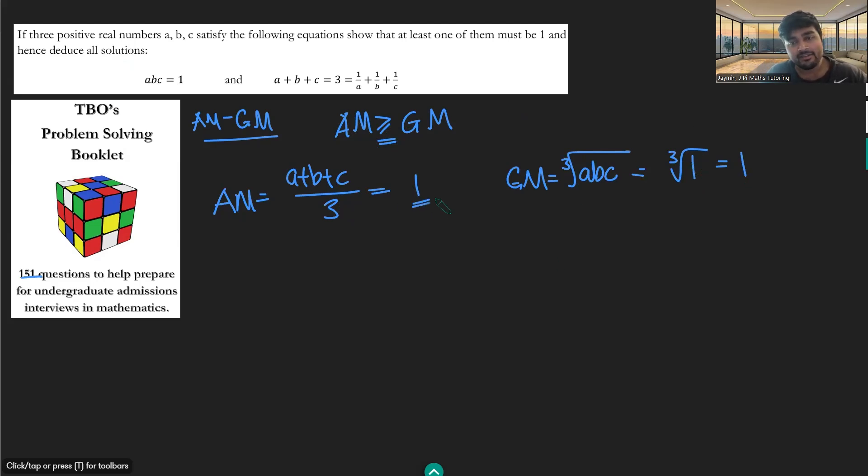And now notice that the AM equals the GM, and so therefore these three numbers A, B, and C have to be the same according to the AM-GM inequality. So A equals B equals C, and then you can just sub that into here and see that they all must therefore be one, and that kind of solves our problem. We prove that the only solution to this is the trivial solution, namely A equals B equals C equals one, and we didn't even really need to use this reciprocal rule here.